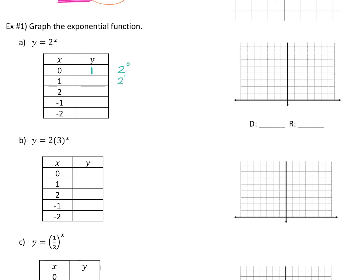Two to the first power is two. Two to the second power — I'm just taking this number and dropping it in. Two to the second power is four. Now the ones everybody loves — negative powers. Two to the negative first power equals one over two to the first power, so that's one half. And then two to the negative second power is one over two to the second power, so it's one fourth. Those are your points, and then we just plot them.